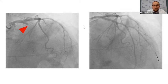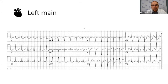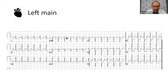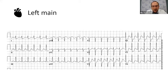So these STEMIs are very, very critical to catch because these patients have to be intervened on really, really quickly. The key with this STEMI is that patients have isolated ST elevations in AVR and then diffuse ST depressions everywhere else. You can sometimes see some ST elevations in V1, but predominantly you're just going to see ST elevations in AVR and diffuse ST depressions.